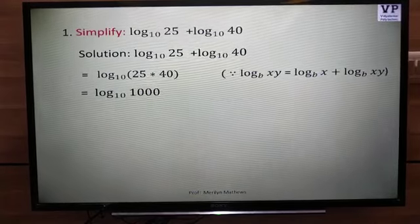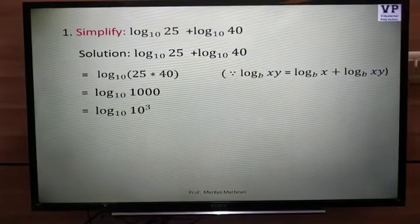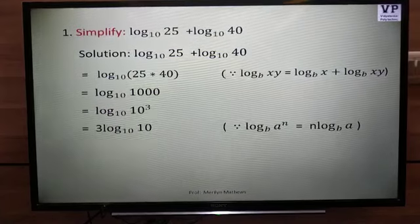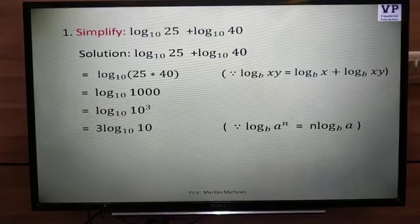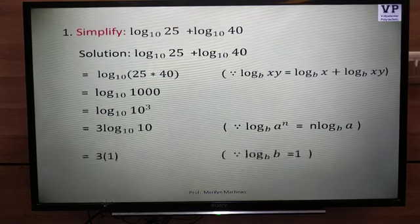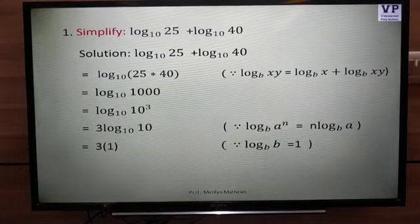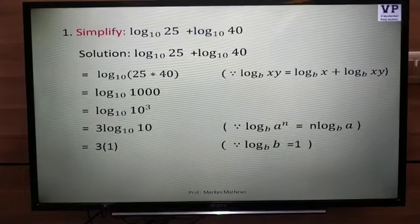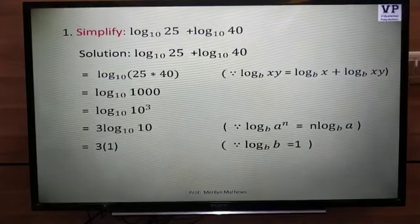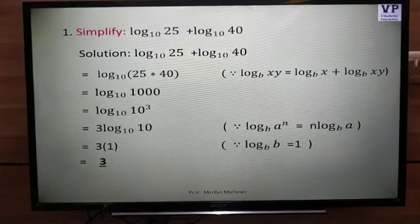Now 1000 can be written as a power of 10. Hence the next line goes as 10 cube. Since it is 10 raised to the power 3, we have to use the power formula, where n gets shifted and hence here we get the answer as 3 log 10 base 10. Now since the number and the base in the logarithm are same, we use the formula log b base b equals 1. Hence we have the final answer as 3 times 1 equals 3.